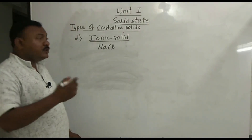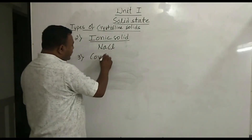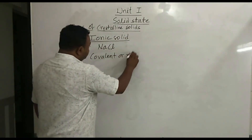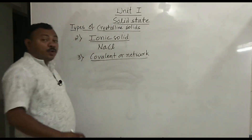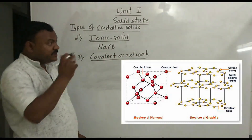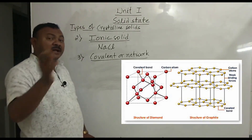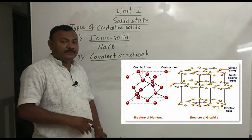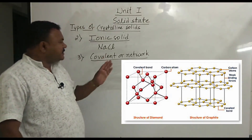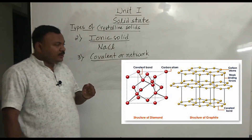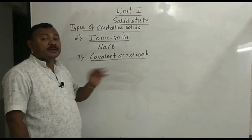The third type of crystalline solid is covalent or network solids. The best examples are diamond and graphite, which are allotropes of carbon where carbon atoms are held by covalent bonds. Crystalline solids containing non-metal atoms held by covalent bonds are called covalent or network solids.